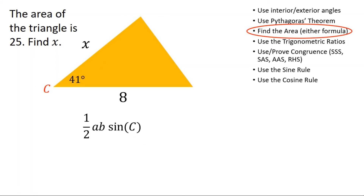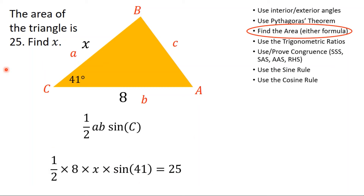To use this I first label angle C because that's the one I've been given, then label the other two angles and all the sides so the correct letters are opposite each other. The area of the triangle is 25, so half ab sin C = 25. Substituting in: a is x, b is 8, and C is 41 degrees, which I set equal to 25. I simplify by typing half × 8 × sin 41 into the calculator, getting 2.62, then divide both sides by 2.62 to find that x is approximately 9.53.